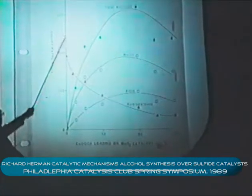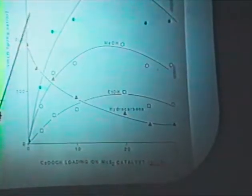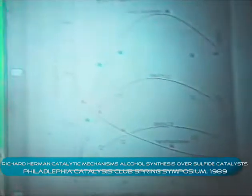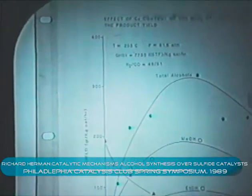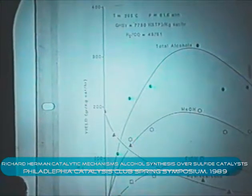Now, the experimental conditions here are higher alcohol synthesis conditions: 295 degrees, about 82 atmospheres, a hydrogen-to-CO ratio of about one. That's what we typically use for the alkali MOS2 catalysts.